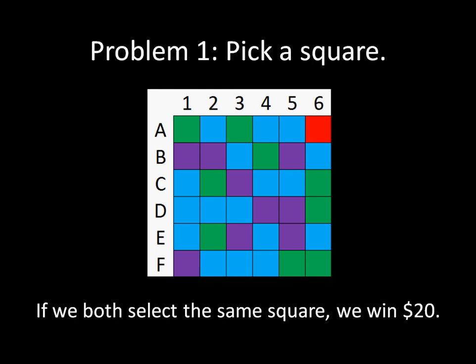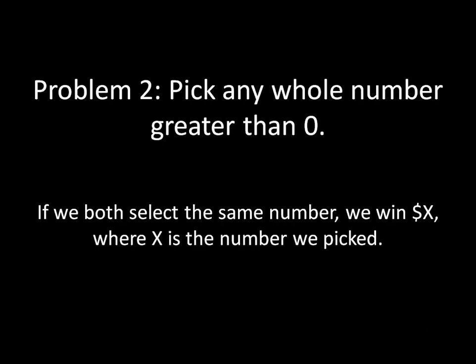Once you've done that, we'll go to problem two. Now I want you to pick any whole number greater than zero. And if we both select the same number, we will win X dollars, where X is the number that we picked. Just go to the comments and put problem two and then put your number down for how much you want to make.